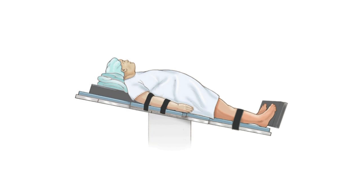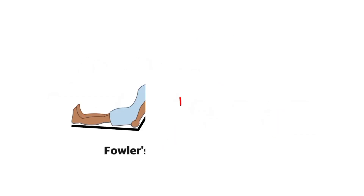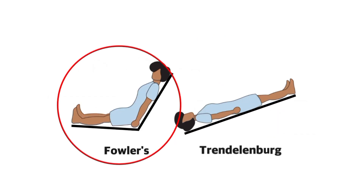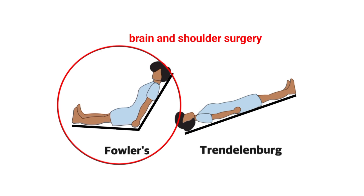5. Reverse Trendelenburg: the body is tilted head up, feet down, used in upper abdominal surgeries. 6. Fowler's position: the patient is sitting upright, common in brain, ENT, and shoulder surgeries.